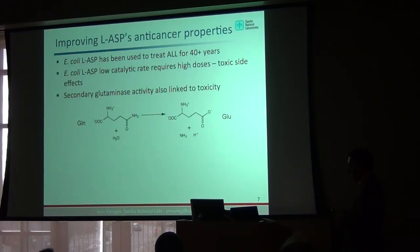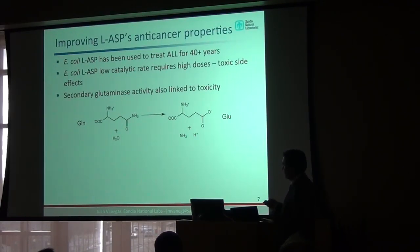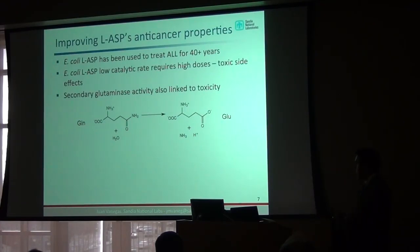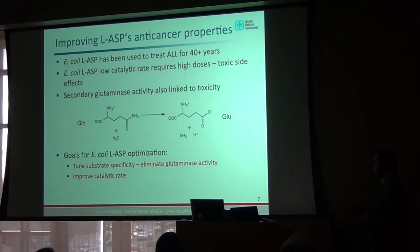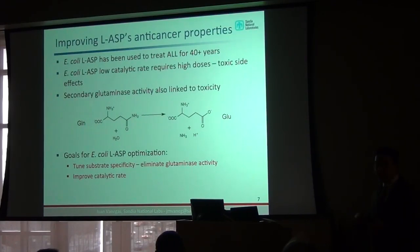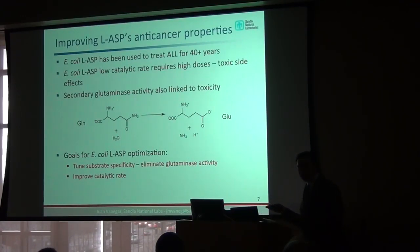The second problem is that the enzyme can catalyze multiple substrates, not just asparagine. A related amino acid, glutamine, has an additional carbon, and the enzyme has a secondary glutaminase activity that has been linked to toxic side effects. So we have two optimization goals: improve the catalytic rate so lower doses can be used, and tune substrate specificity to eliminate the unwanted side reaction.